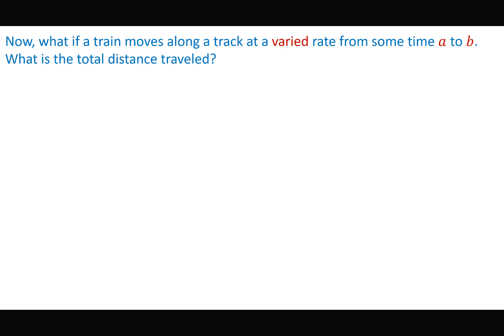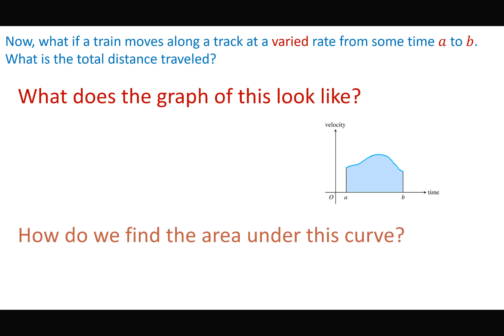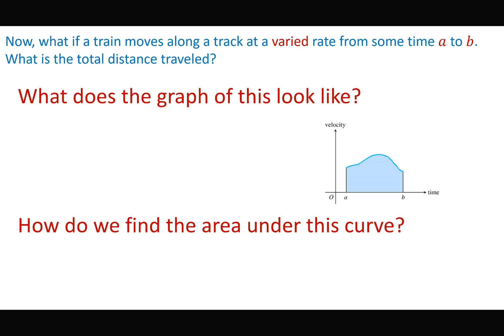Now what if that train is moving along the track at a varied rate of speed — not a constant 75 miles per hour — from some time a to b? What is the total distance traveled? The velocity is now varying, creating a curve — no longer a straight horizontal line. This one doesn't create a nice geometric rectangle, so this is where integration comes into play.